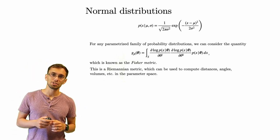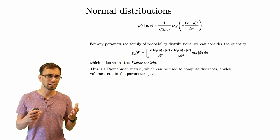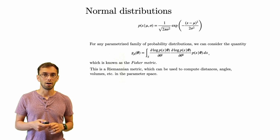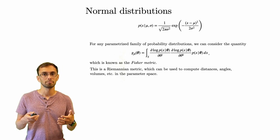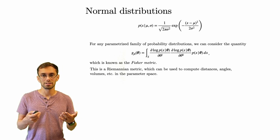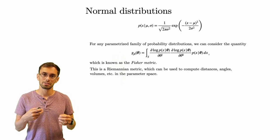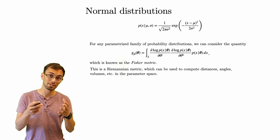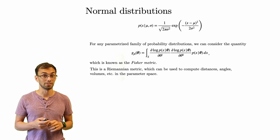I'm not going to discuss where the Fisher metric actually comes from. You can think of it as the second-order Taylor polynomial of the relative entropy between distributions. It has roots in information theory, but the justification for how you get the specific quantity is not important for this talk.